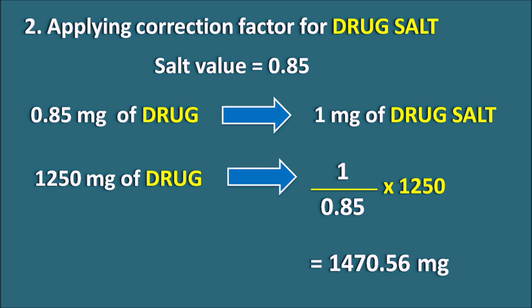The loading dose of 1470.56 mg must be administered to achieve the desired steady-state concentration. There is a large difference between the pure drug (1250 mg) and the drug salt (1470.56 mg). If we do not apply this correction factor, we will not achieve the desired plasma concentration, which may affect the therapeutic activity of the drug.